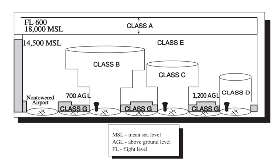In Kenya, Classes A, C, D, and G are used, alongside classified military operation areas defined as restricted and prohibited areas controlled by military ATC units. Class A is used above FL 145, except where ground level exceeds FL 145, in which case Class A exists above 1,500 feet AGL and Class G below. Class C airspace is used exclusively in the Nairobi TMA and Center. Class D airspace is used in all other aerodrome airspaces. Class G airspace exists everywhere else, particularly between ground level and 1,500 feet AGL.